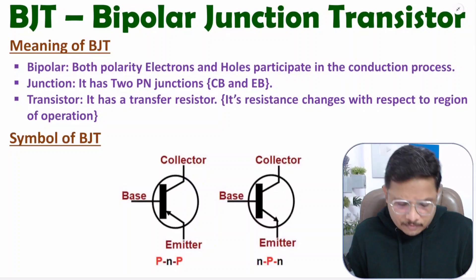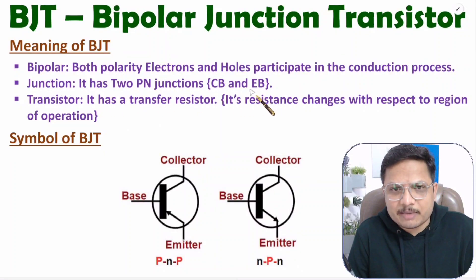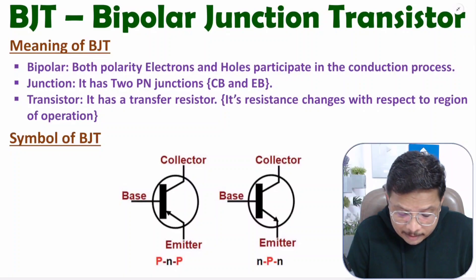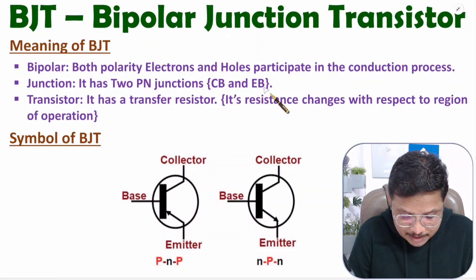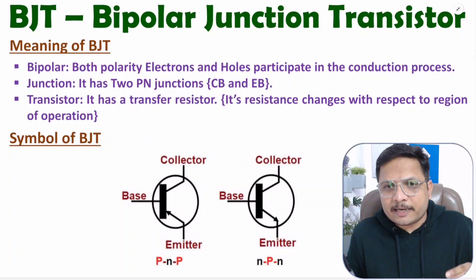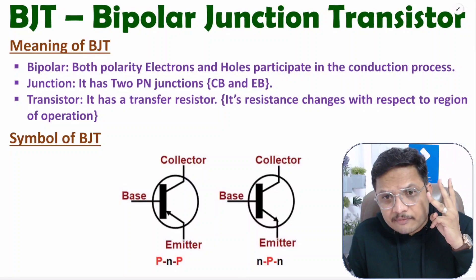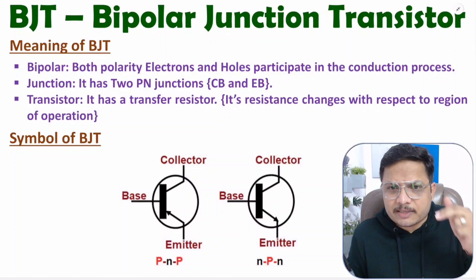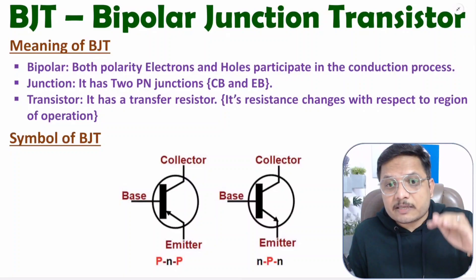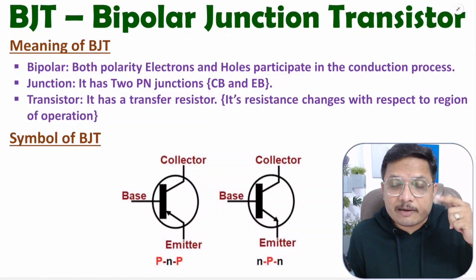Junction means BJT has two PN junctions: the collector-base junction and the emitter-base junction — I'll show you these in the structure. Transistor means it has transfer resistance. BJT operates in three modes: active, cutoff, and saturation. In these three modes, the resistance of BJT changes, meaning it has transfer resistance — resistance changes with respect to the operational region.